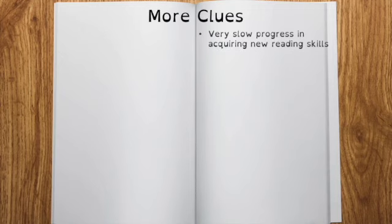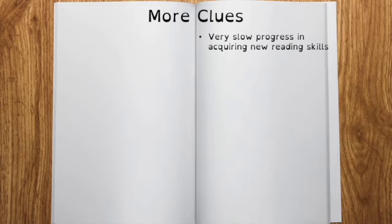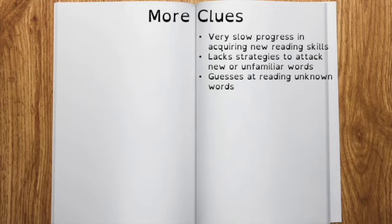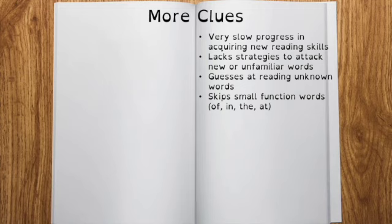Some more clues. Dyslexics are very slow, make very slow progress in acquiring new reading skills. They lack strategies to attack new or unfamiliar words. They don't have those word attack skills. They guess at reading unknown words. They skip those small function words of, at, the.